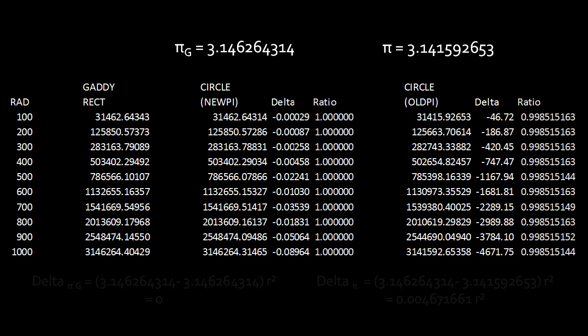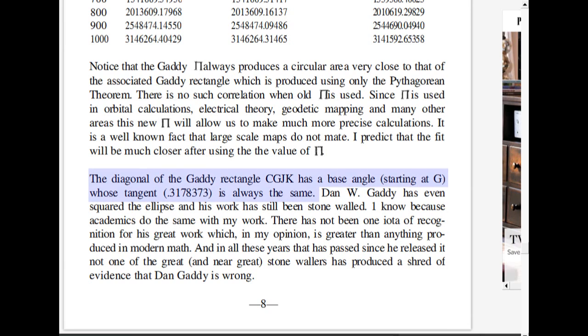Of course, it's odd that a Mensaite wouldn't realize the ratio of the areas should remain constant, regardless of what value gets assigned to the radius. Especially since René gets excited over the fact that the tangent between the diagonal and the base of Gaddy's rectangle remains constant, regardless of the value of the radius.